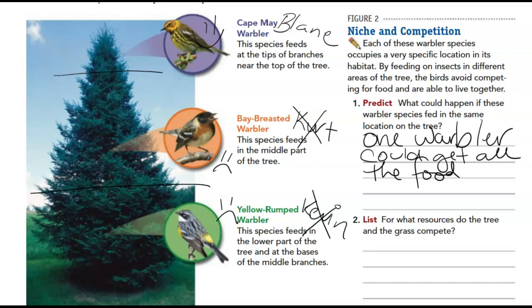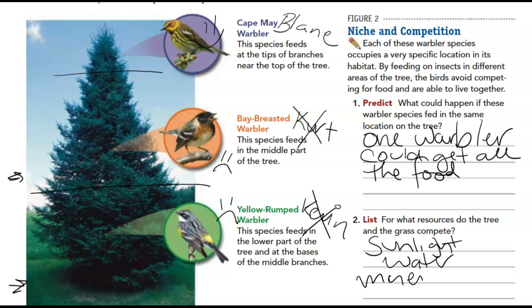Question two asks for what resources the tree and the grass compete. Both the tree and the grass need similar things to survive — like sunlight, water, minerals, and space.